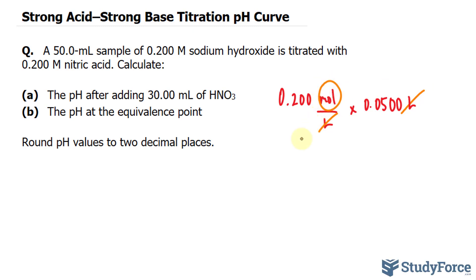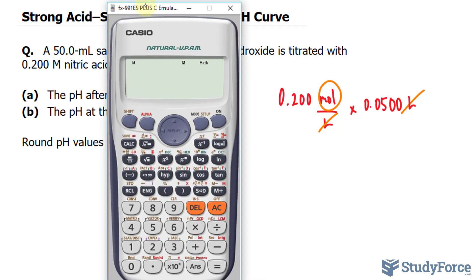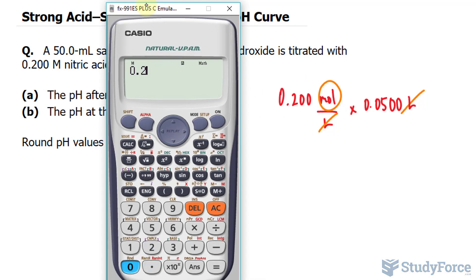Now our final answer here should be three significant figures. Using our calculator, 0.200 times 0.0500 and we end up with 0.0100.